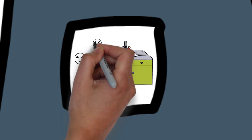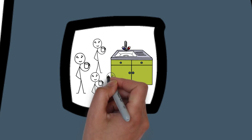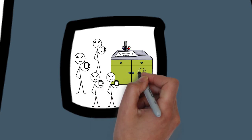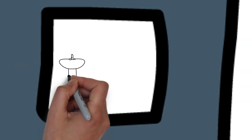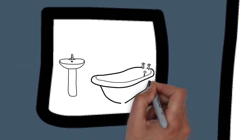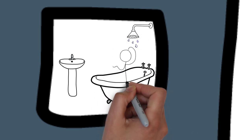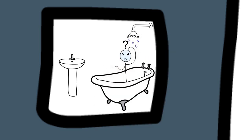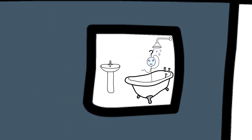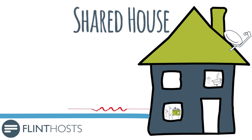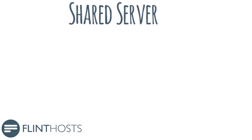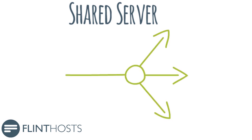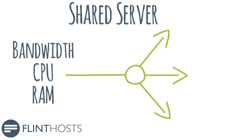Most of the time this is fine and everyone is able to share equally. But every now and then someone may need more water than everyone else. Because they're using more water, it means that less is available for the other occupants. Likewise, on a shared server everyone shares the same resources — CPUs, RAM and so on — which reduces costs considerably.